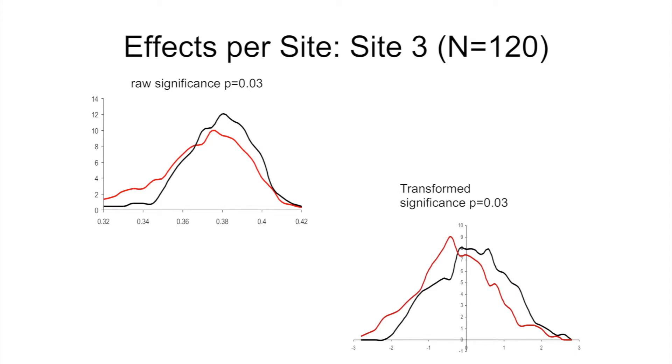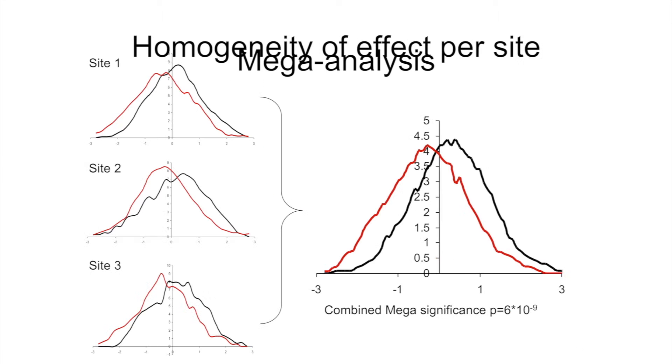And then we looked into yet another site that has a smaller number of subjects. And despite that, we still were able to recover more or less normal distributions, and we still were able to get pretty much the same effects on this. So it was only reasonable for us to combine it all and perform mega-analysis.